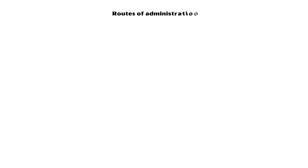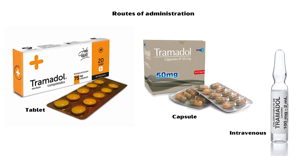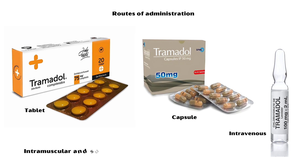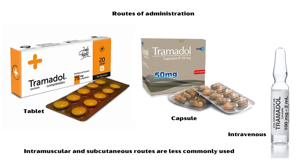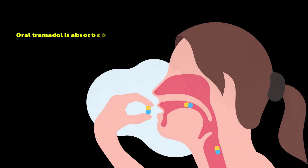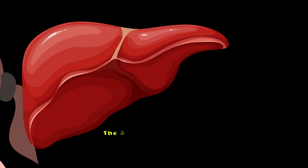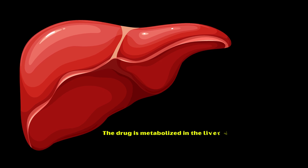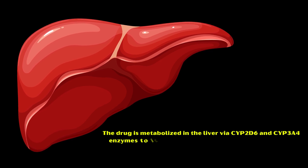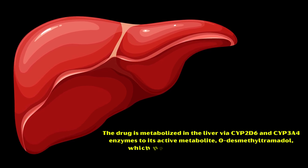Tramadol is available as oral tablets and capsules and intravenous preparations. Intramuscular and subcutaneous routes are less commonly used. Oral tramadol is absorbed well from the gastrointestinal tract with a bioavailability of around 70–75%. The drug is metabolized in the liver via CYP2D6 and CYP3A4 enzymes to its active metabolite O-desmethyltramadol, which has a higher affinity for mu receptors.